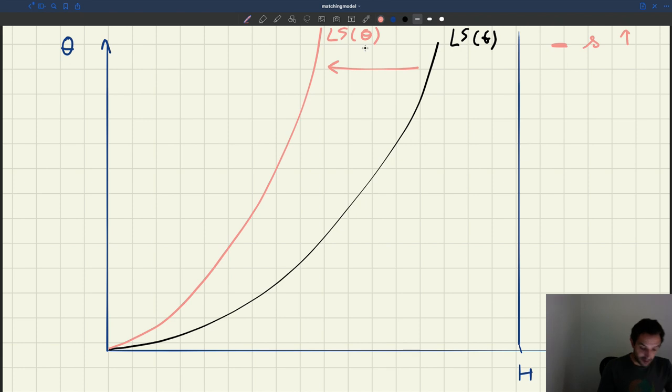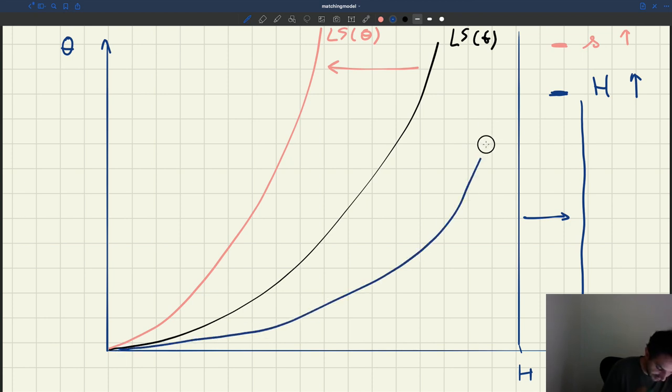Now we can ask what happens if h, the size of the labor force, goes up. Well, so here, if h goes up, we know that this is going to shift out. Something like this to some new h here. And as a result, that's going to drag all our labor supply curve out, something like this.